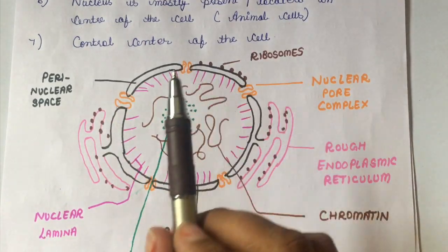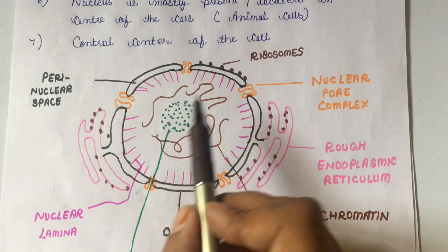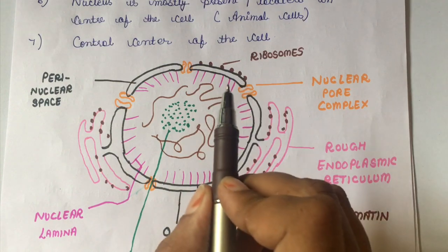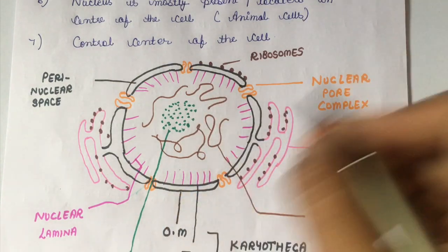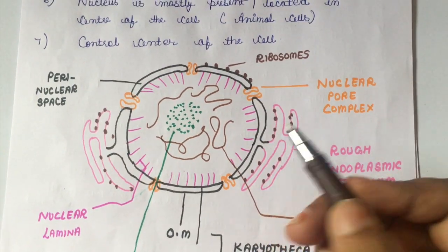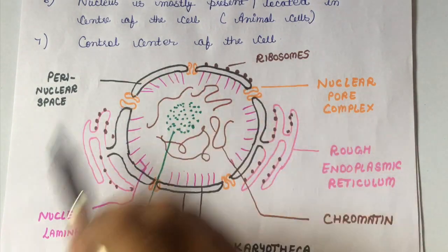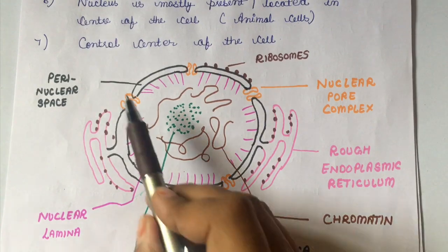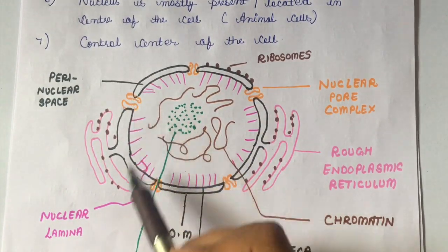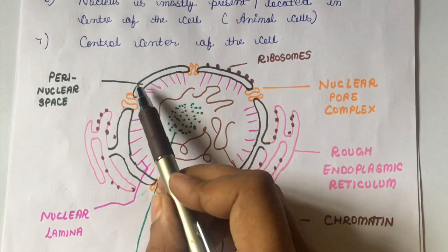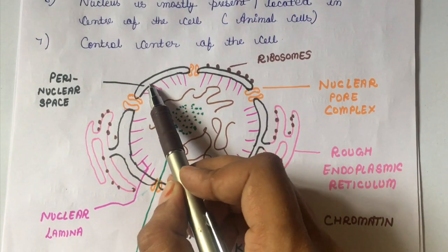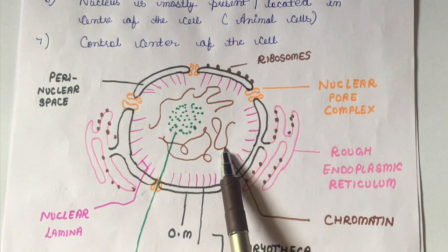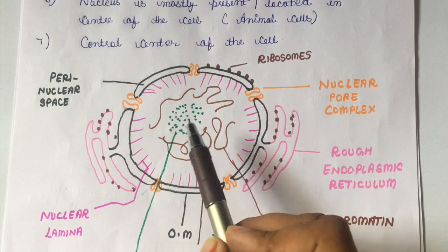The nucleus is generally spherical in shape, but it may be flattened or irregular depending on the type of cell, and its shape also changes as the cell matures. For example, in columnar epithelial cells, the nucleus is elongated. Looking at the structure of the nucleus, it has an outer membrane and inner membrane — collectively called karyotheca — nuclear pores, nuclear pore complex, perinuclear space, ribosomes attached to the outer membrane, chromatin, and a darkly stained region in the center called the nucleolus.